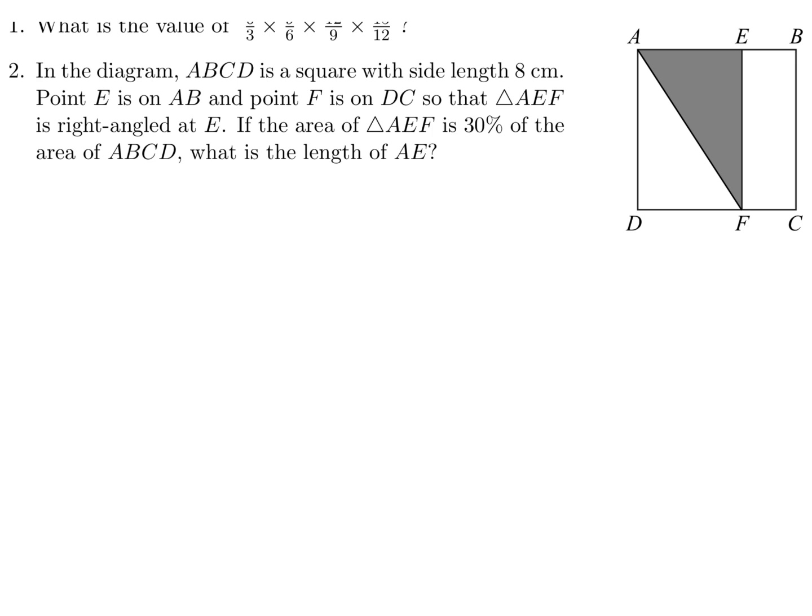Now, the length of AE is what we're trying to figure out, right? So this section right there. So what are we given? We're given the side length as 8 and it's a square. So the total area is 8 times 8. And 30% of that, so multiply by 0.3, is the area of triangle AEF.